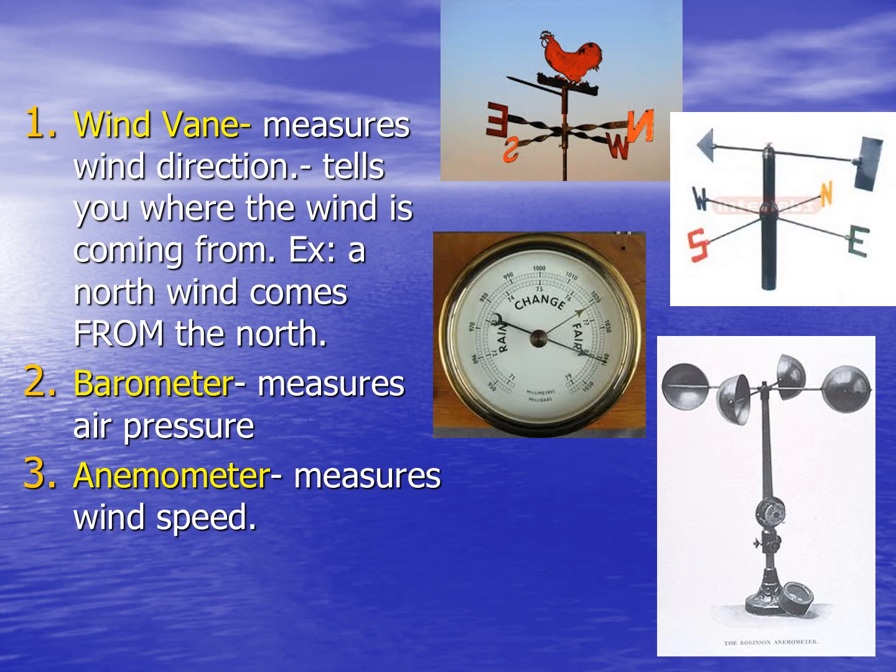A wind vane measures wind direction. It tells you where the wind is coming from — for example, from the north or from the south. A barometer measures air pressure. An anemometer measures wind speed.